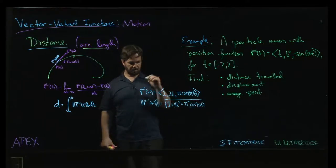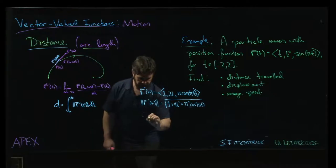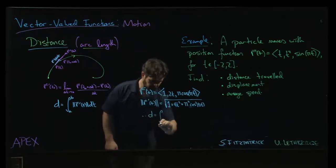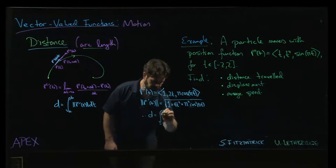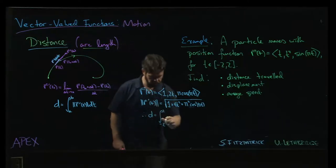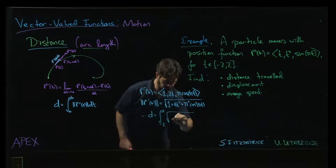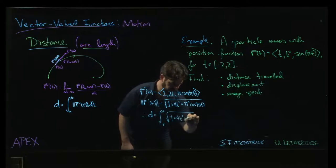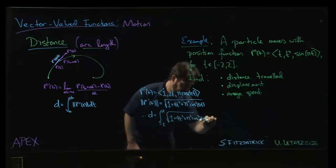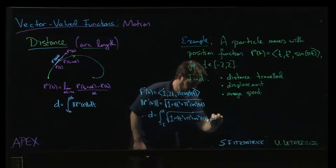So that means that the distance traveled is going to be the integral from minus 2 to 2 of the magnitude of r prime. So square root of 1 plus 4t squared plus pi squared cos squared pi t dt.